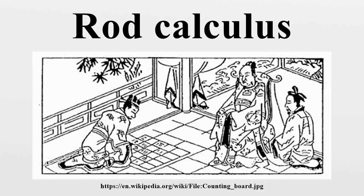Subtraction without borrowing: in situations where no borrowing is needed, one only needs to take the number of rods in the subtrahend from the minuend, and the result is the difference. The image shows the steps in subtracting 23 from 54.